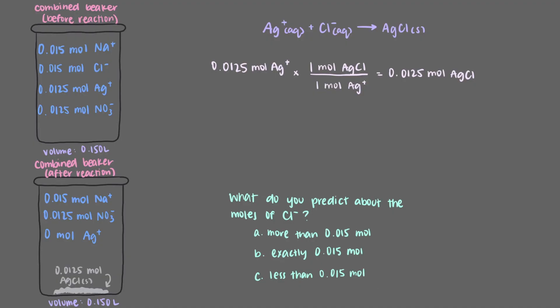We started with 0.015 moles of chloride ion and some of it reacts with the silver to form the precipitate, so there will be less than 0.015 moles left. But how much? Because silver ions and chloride ions reacted in a one-to-one ratio, we only used up 0.0125 moles of chloride ions. This means that we have 0.0025 moles of chloride ions left over. Let's add that to our beaker and now we're done.